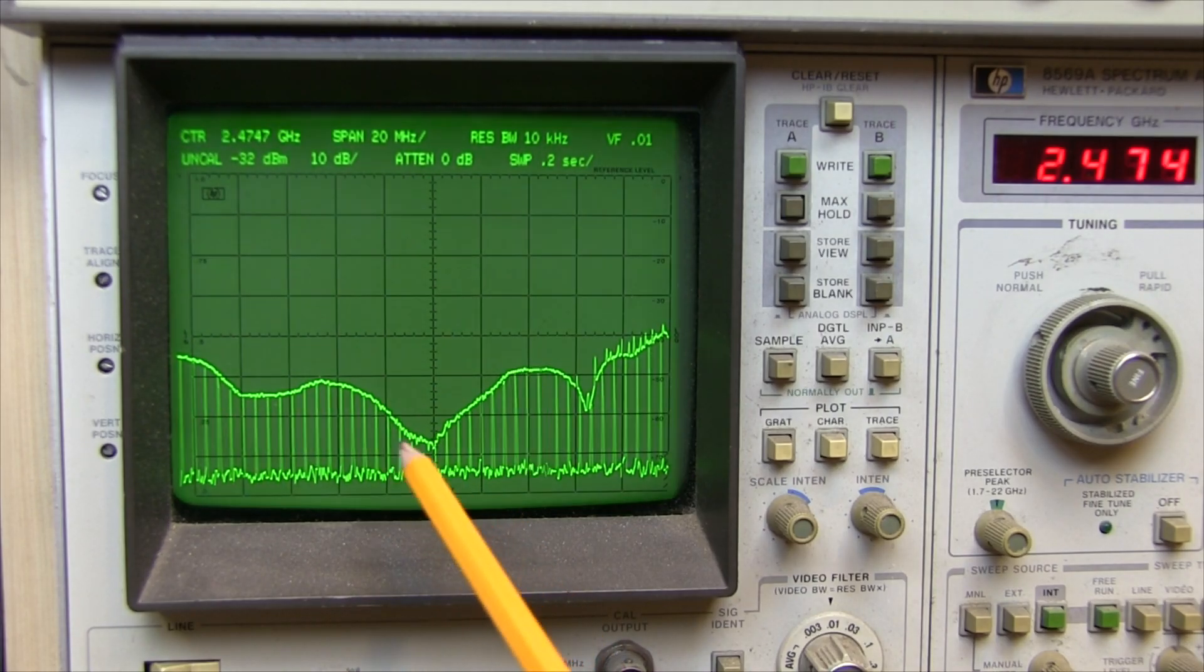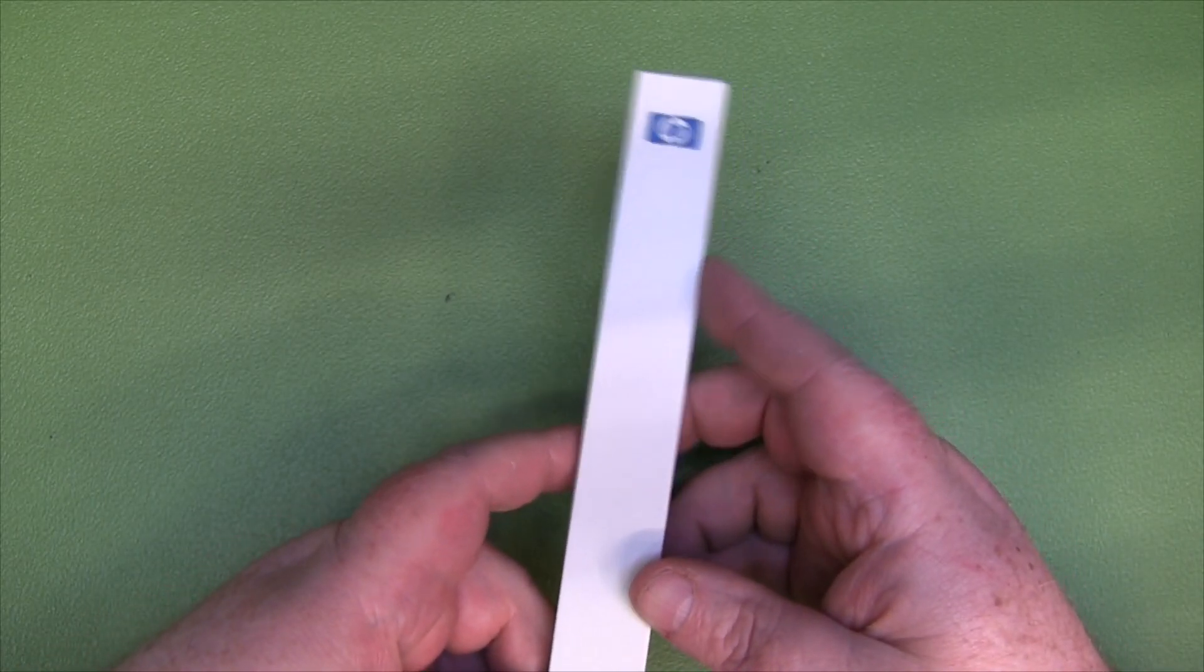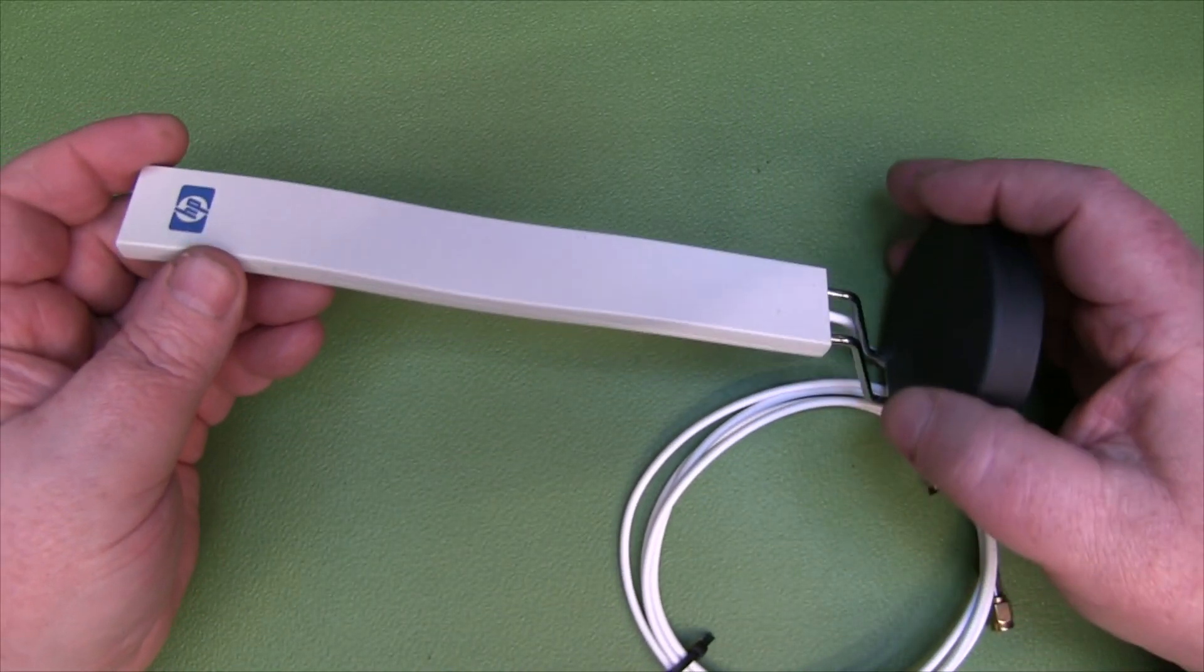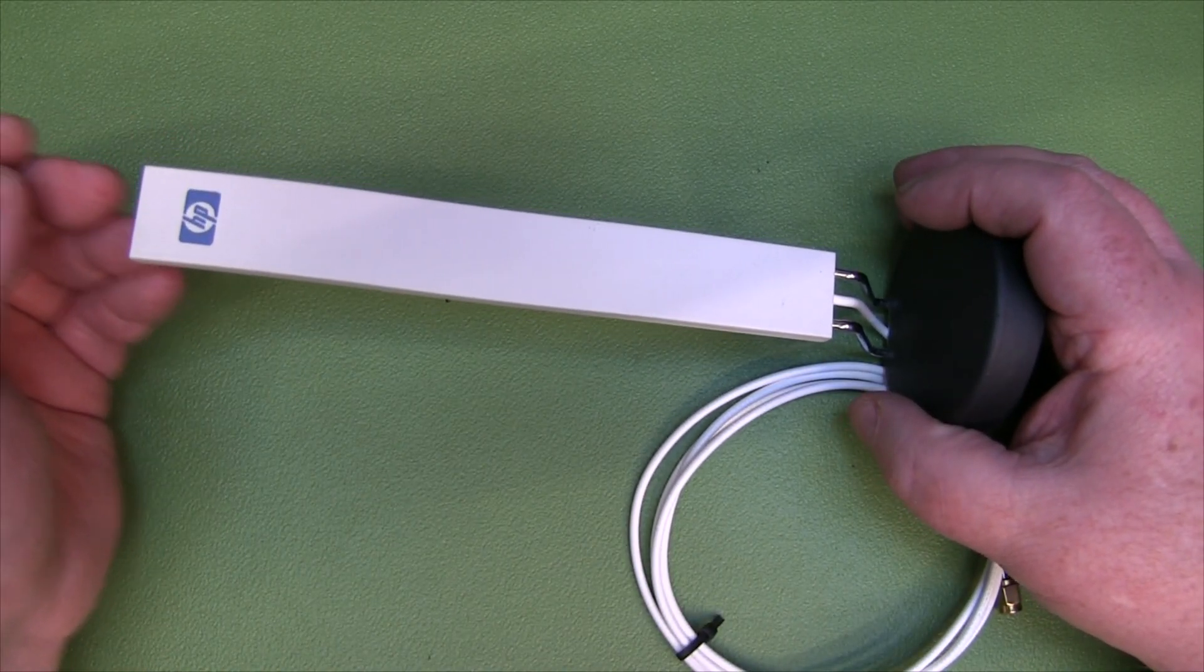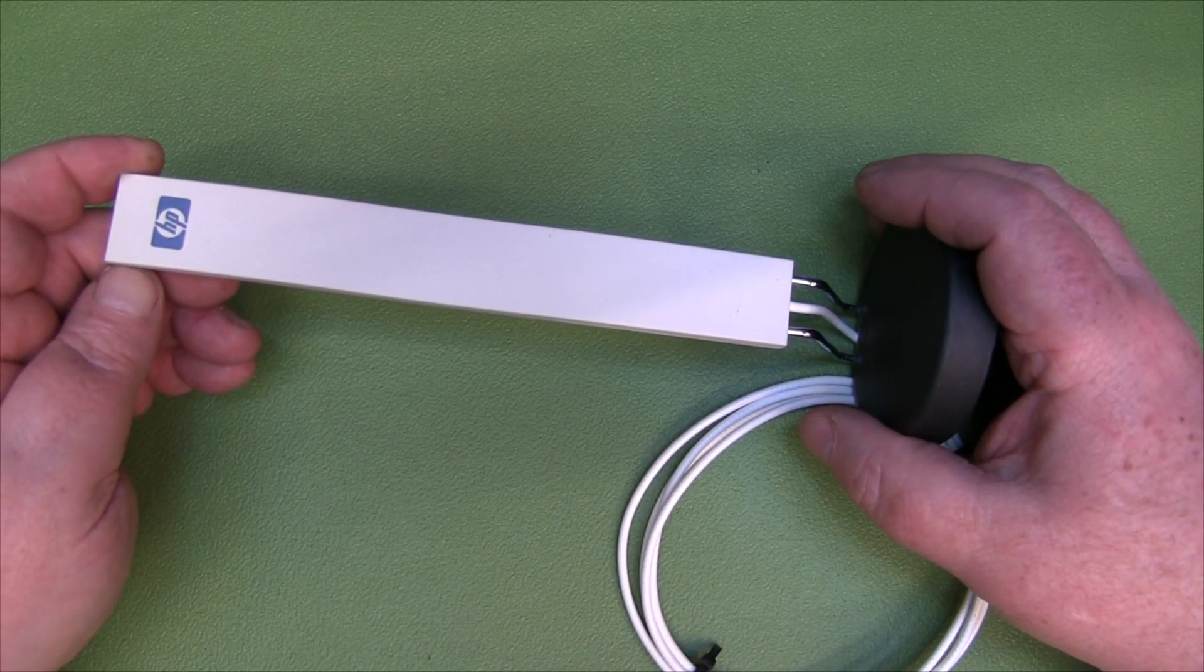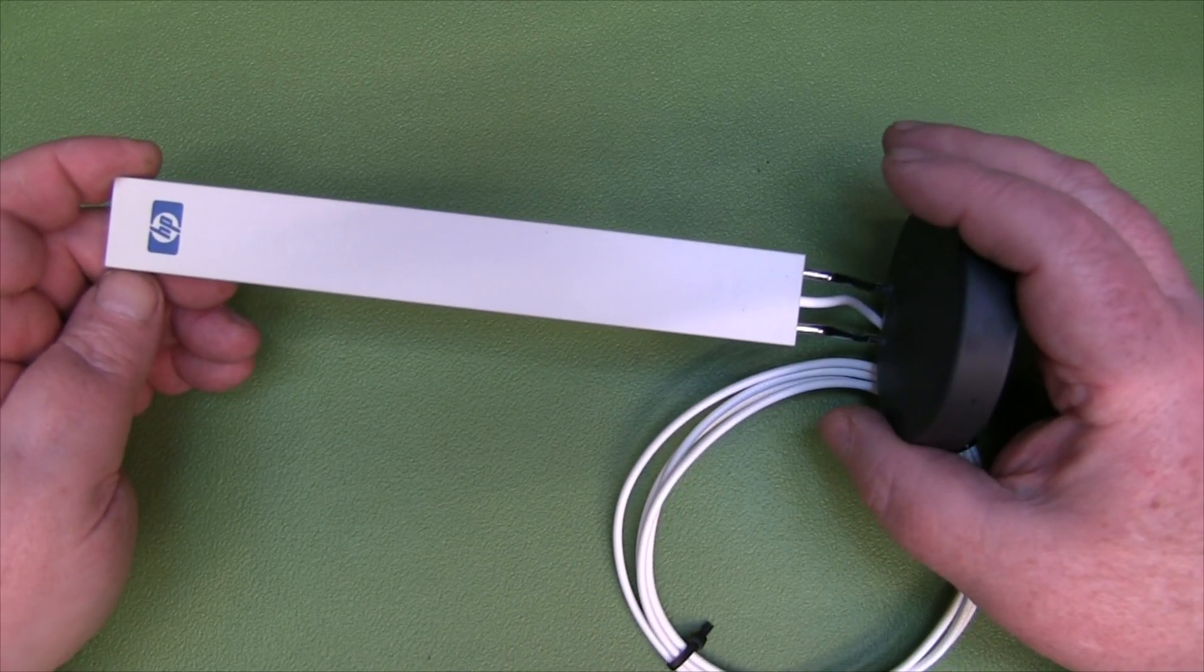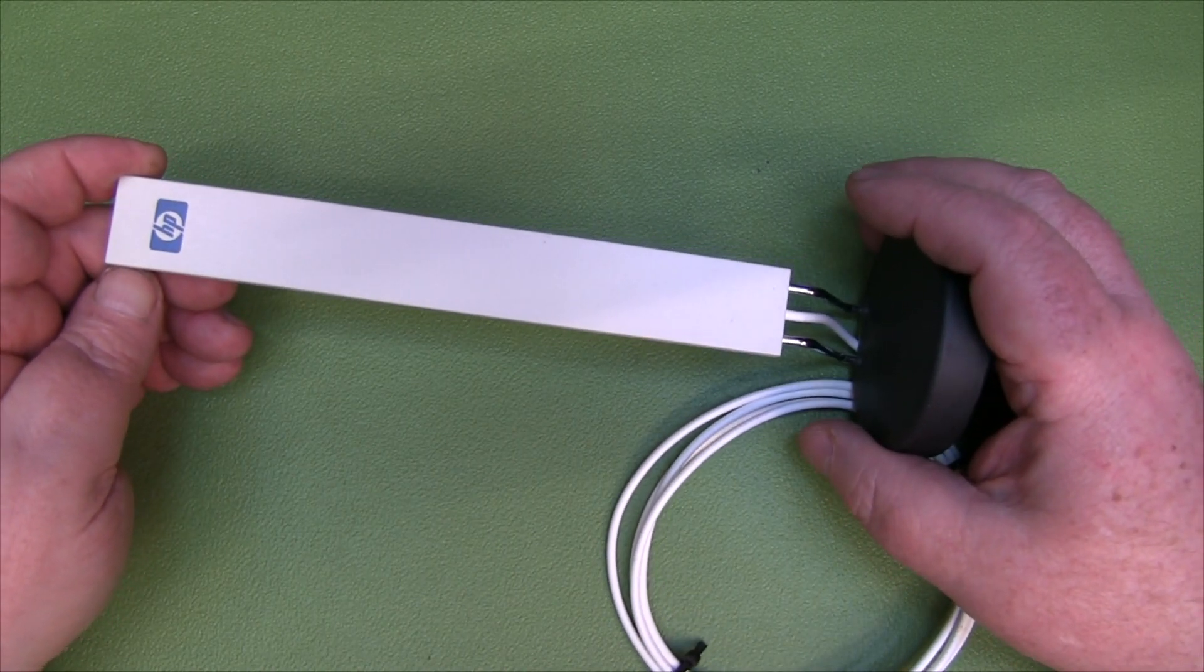As you just saw over on the test bench, it certainly does work well in the Wi-Fi spectrum, no complaints there. The claimed operating frequency of this antenna is 2.4 gigahertz to 2.484 gigahertz, so it's certainly bang on the money with what we've just seen over on the test bench.